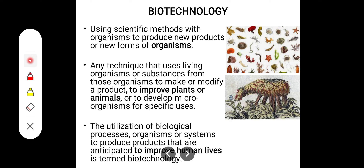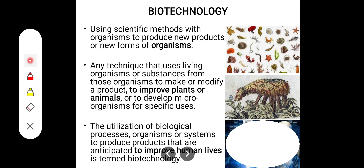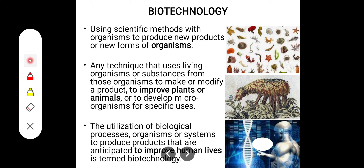The third point: the utilization of biological processes, organisms, or systems to produce products that are anticipated to improve human lives. So stem cell therapy, cloning, and improving cancer research all come under this category.